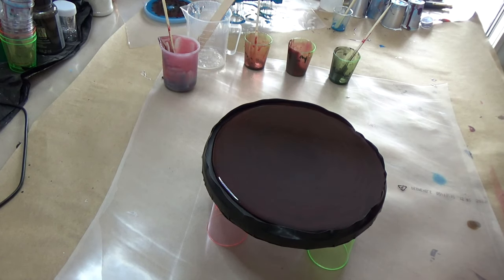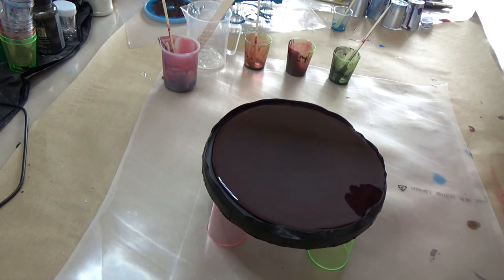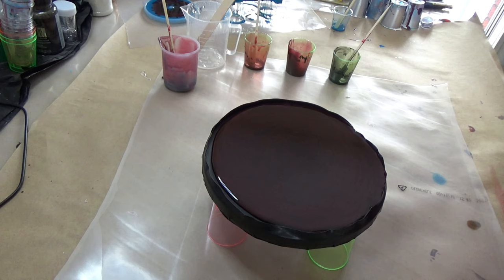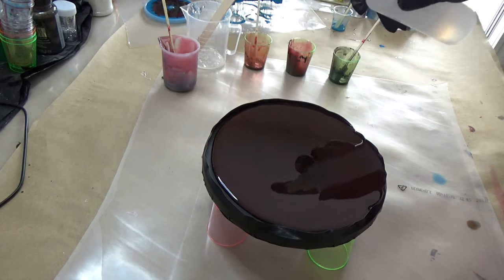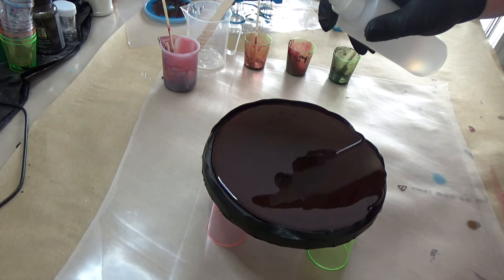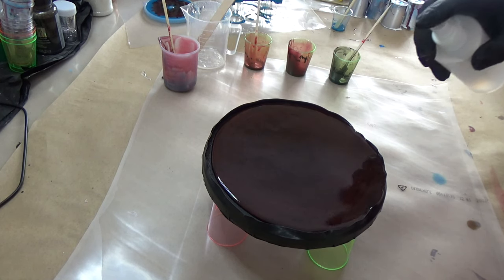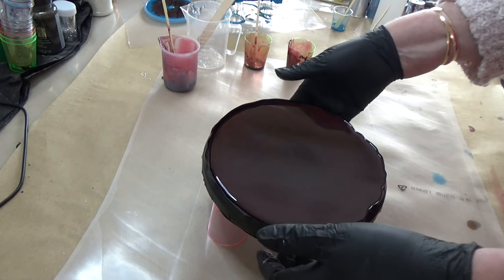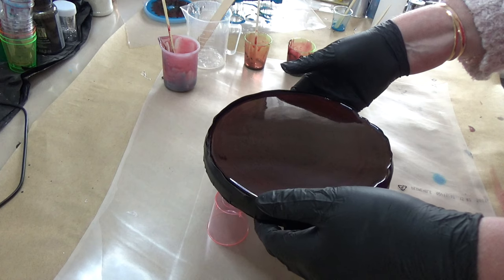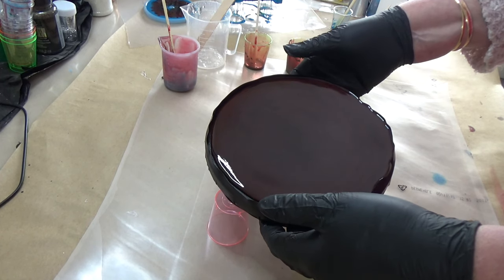Alright guys, so what I do, it does actually look a little bit dark. So instead of torching it or using my heat gun, I literally spray the isopropyl alcohol onto it. You can see all the bubbles coming up. So the bubbles should pop on their own and I'm just going to move this around gently.